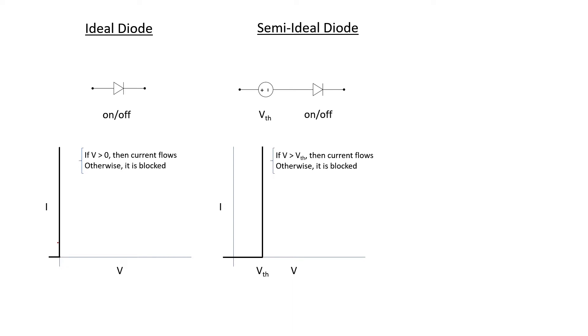Let's look at a semi-ideal diode. Let's assume that it has a turn-on voltage or a threshold voltage. Normally, if it's a silicon diode, then that threshold voltage will be about 0.7 volts. If the voltage is higher than the threshold voltage, then current will flow through the diode.